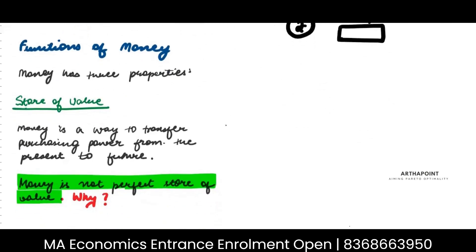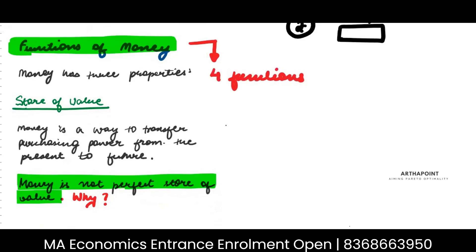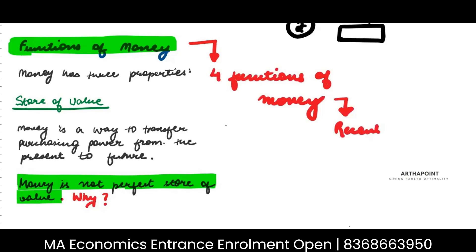Now let's think about what are the functions of money. It differs from book to book — we talk about four functions of money, though some books give only three. We will first look at those three functions and then also look at the fourth function of money, which has in fact been introduced very recently.